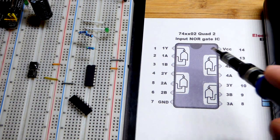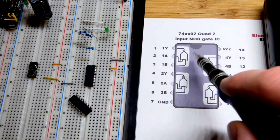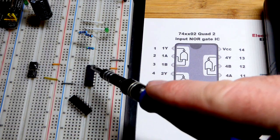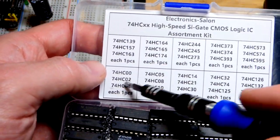So now in this video we come back to the quad two-input NOR gate, the 7402 series integrated circuit. There we have the high-speed CMOS version that we looked at in the last video.